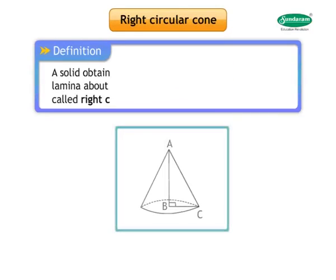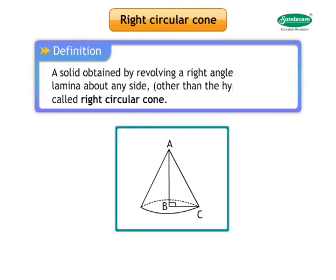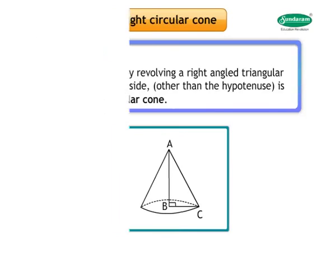Right Circular Cone: A solid obtained by revolving a right-angle triangular lamina about any side other than the hypotenuse is called a Right Circular Cone.